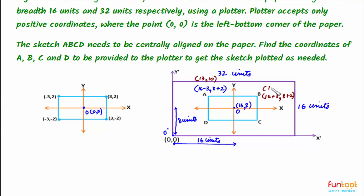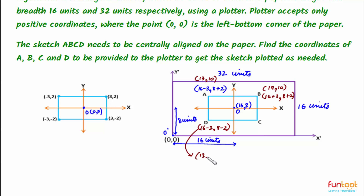So B will be (19, 10). Then the initial coordinates for D were (-3, -2). So point D is horizontally 3 units to the left of O, giving 16 minus 3, and vertically 2 units down, so the Y coordinate will be 8 minus 2. So the coordinates of D become (13, 6).